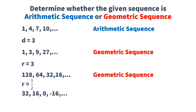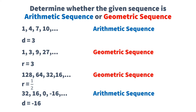So let's have the last one. 32, 16, 0, negative 16. So you are actually adding negative 16 on the terms. So therefore, the common difference is negative 16 and this is arithmetic sequence.